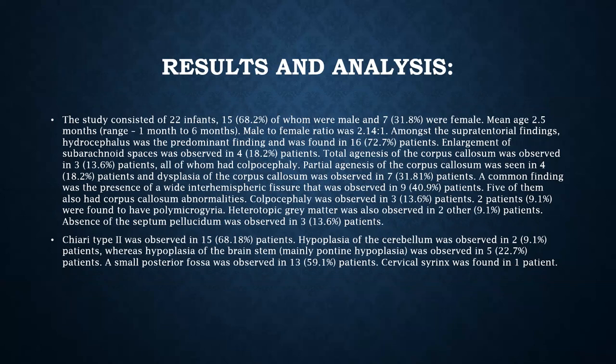The study consisted of 22 infants, of which 15 were male and 7 were female. The mean age was 2.5 months. Among the supratentorial findings, hydrocephalus was the predominant finding seen in 16 patients. Enlargement of subarachnoid spaces was observed in 4 patients. Total agenesis of the corpus callosum was observed in 3 patients, partial agenesis in 4 patients, and dysplasia of the corpus callosum was seen in 7 patients. A wide inter-hemispheric fissure was observed in 9 patients, 5 of whom also had corpus callosum abnormalities.